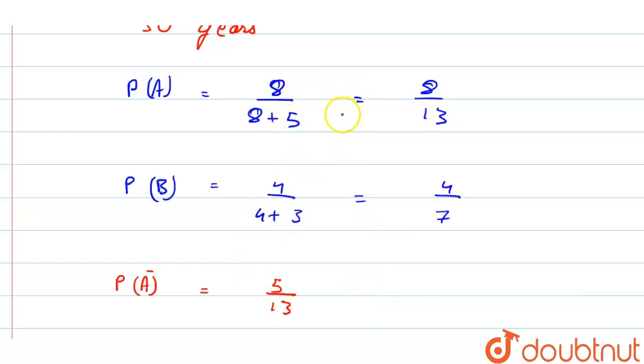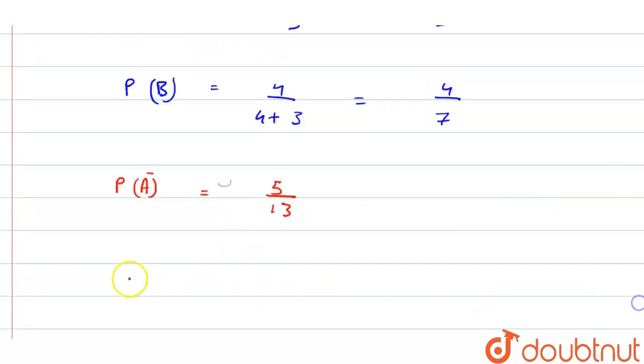Now probability of B dash is 3 by 7. So now we have to find probability that one will live up to 30 years.